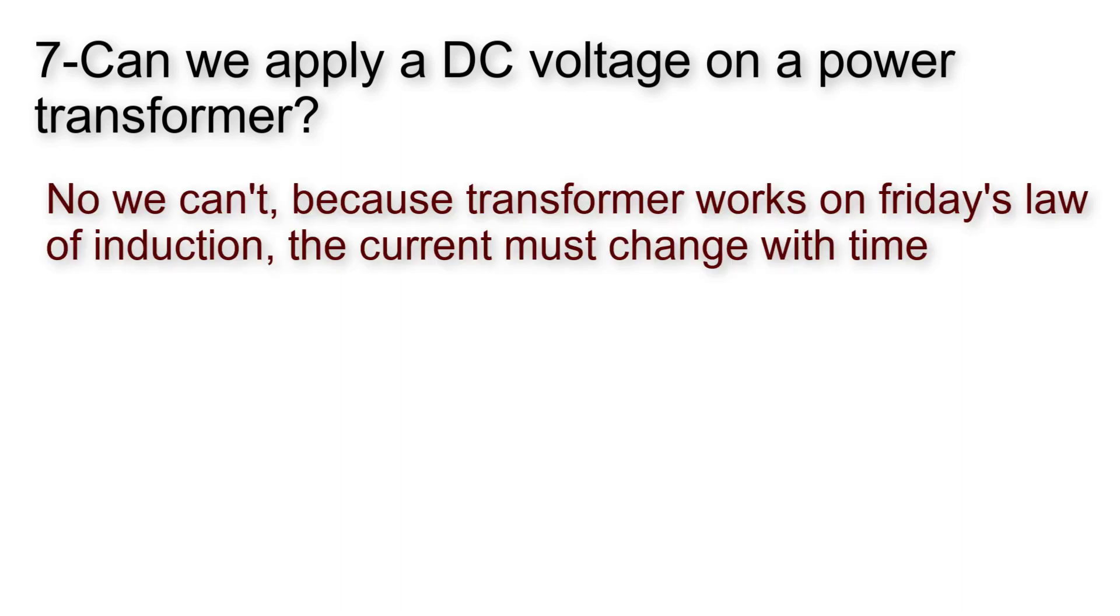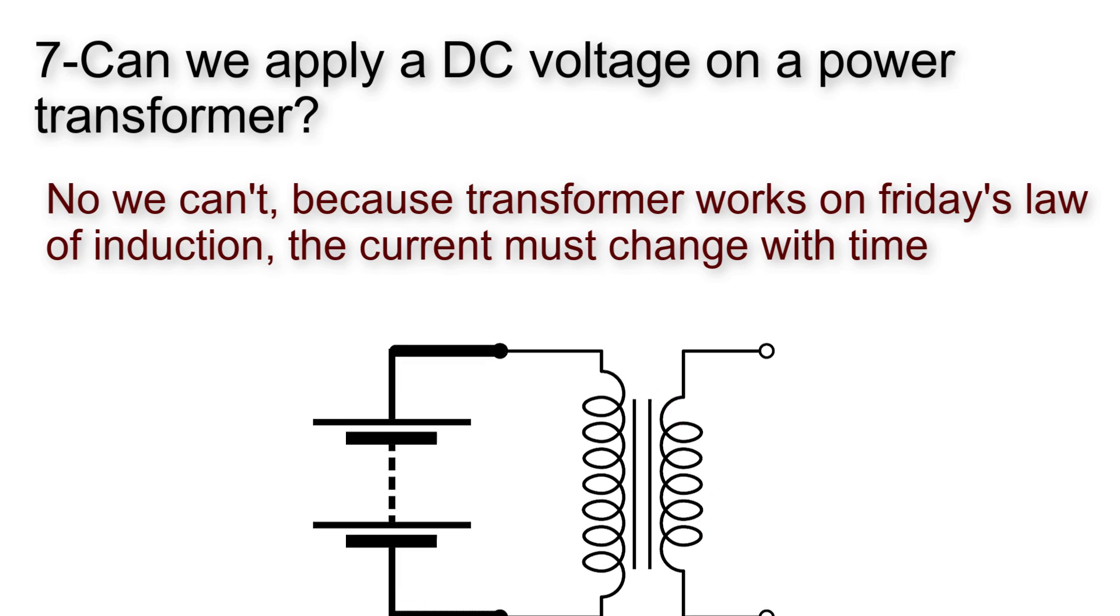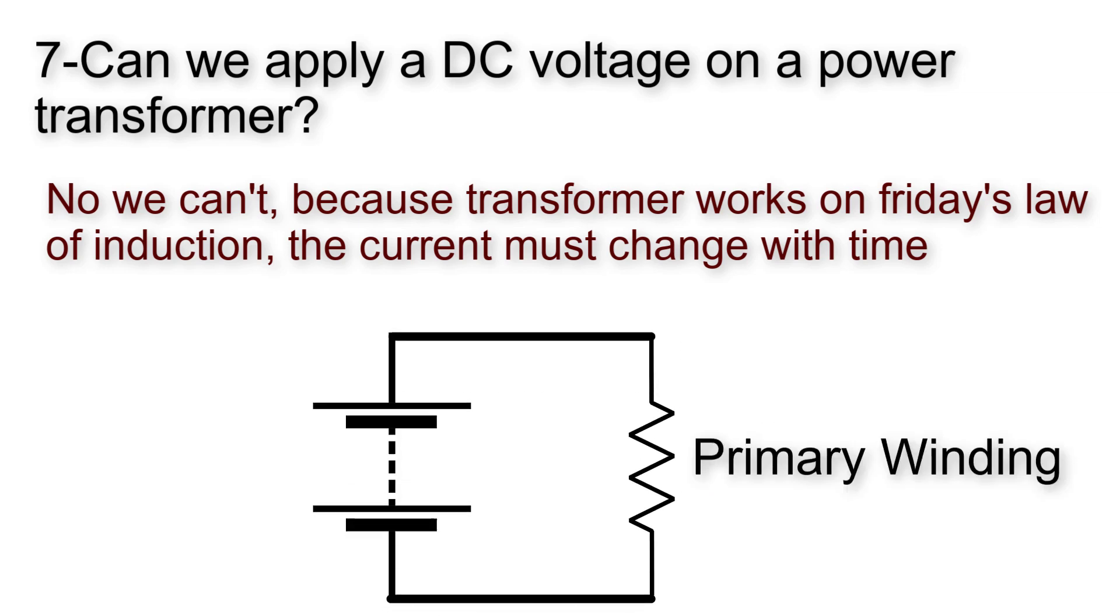Transformer works on Faraday's law of induction, the current must change with time. But if DC is applied the transformer will not transfer power to the secondary winding and the DC supply will see the primary winding as a resistive load. Tons of current will flow through the resistive loads that will cause overheating and burning to the transformer.